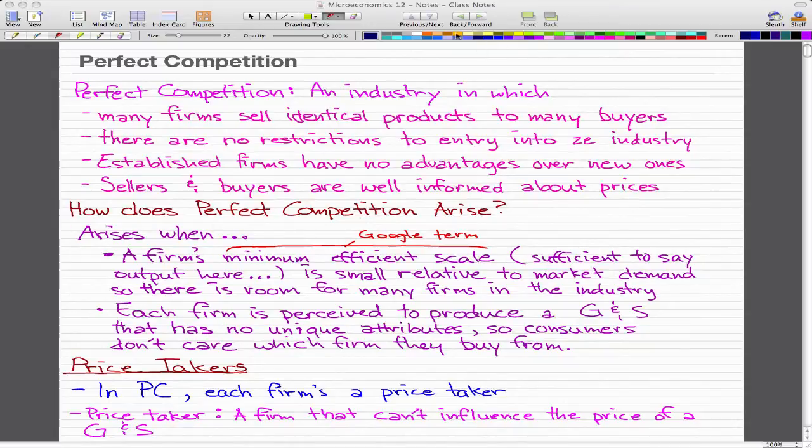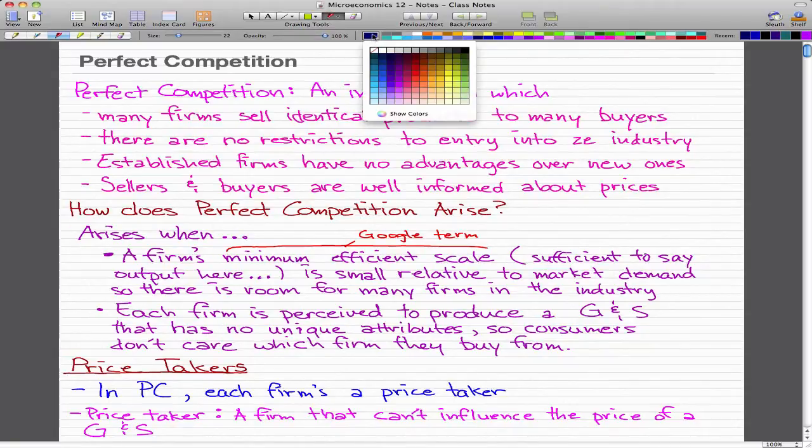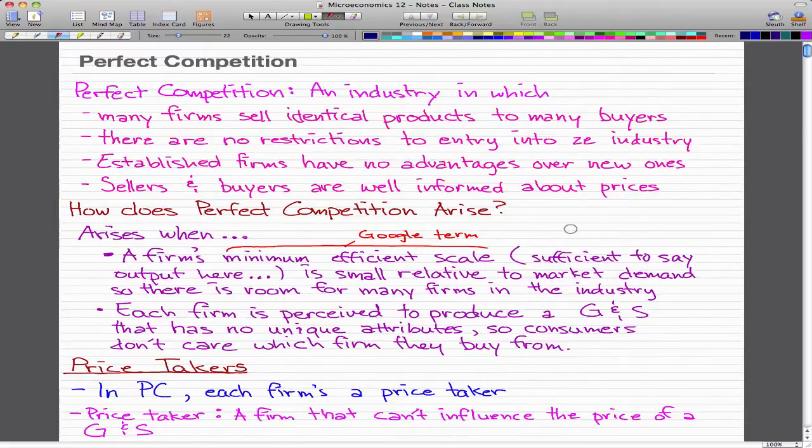For example, in perfect competition, a good example would be the retail industry where firms sell clothes. It's pretty easy to get into the industry; it's just really competitive.